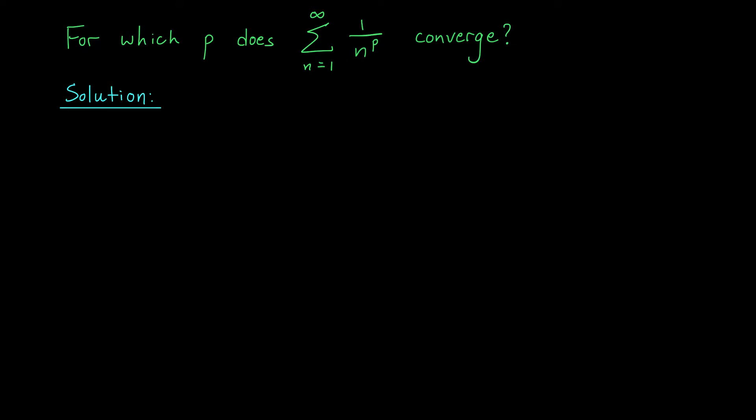With a bit of thought, you may realize this works for any positive power — if I have 1 over n to some positive power, then when n becomes large, this fraction tends to zero. But negative powers might be a problem: if I have 1 over n to some negative power, I can flip the fraction and get n to some positive power, which tends to infinity. So if p is negative, then 1 over n to the p tends to infinity, not zero, and by the test for divergence, this series diverges.